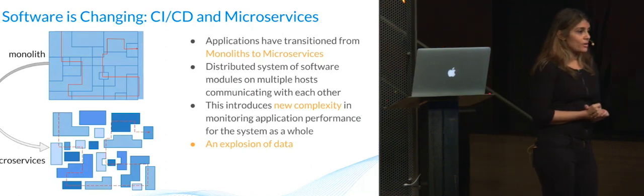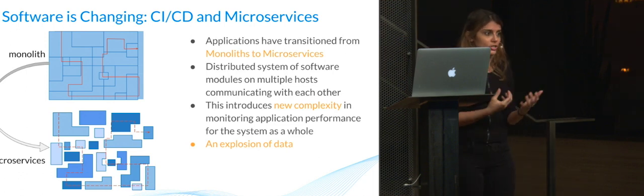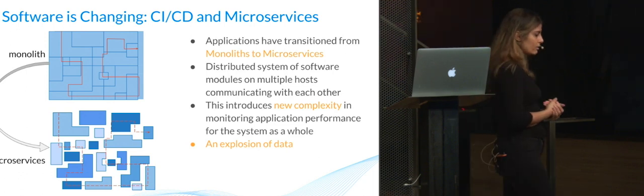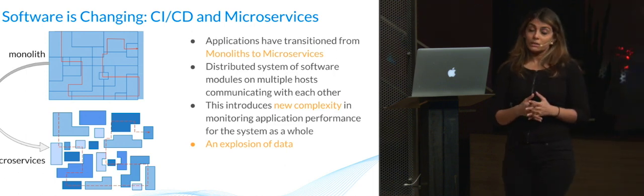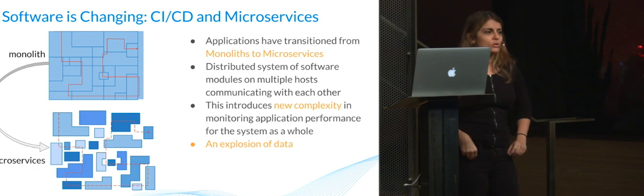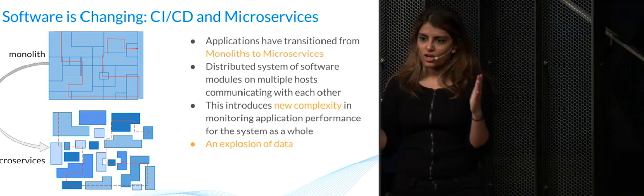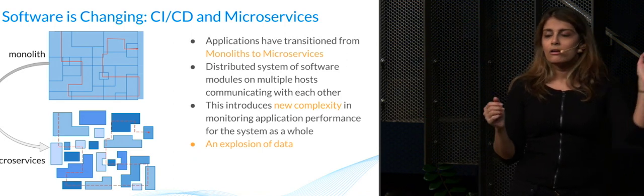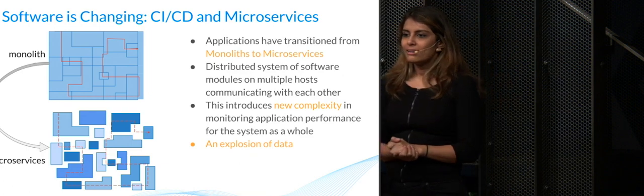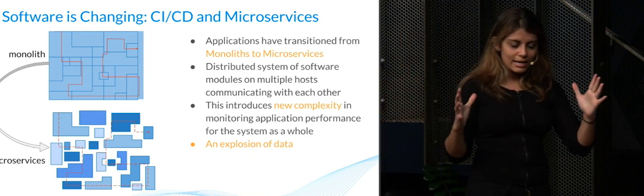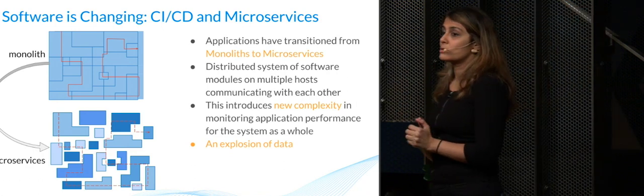As people here probably know better than anybody else, software is changing. Software workflows are changing, especially with the advent of CICD and also microservices. Things are done completely differently now. This diagram you see here — the first one is what a monolithic architecture would look like, where it's one giant box and a request from start to finish in its lifecycle goes through various parts of this box, which while huge and containing a lot, is at least contained and viewing something through it was much easier.